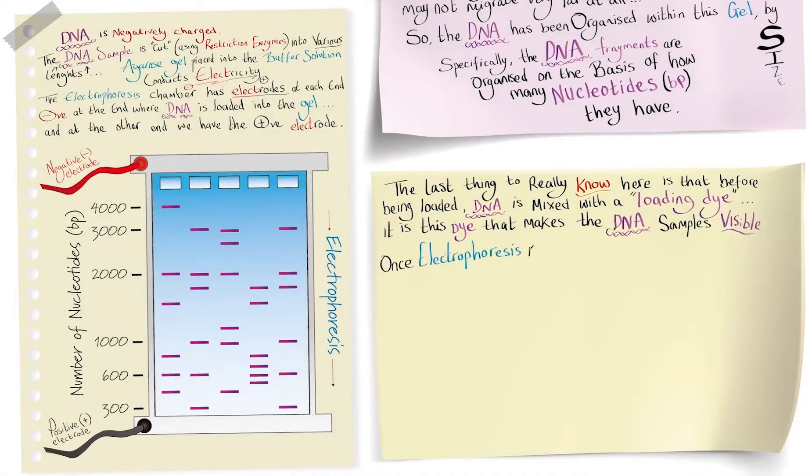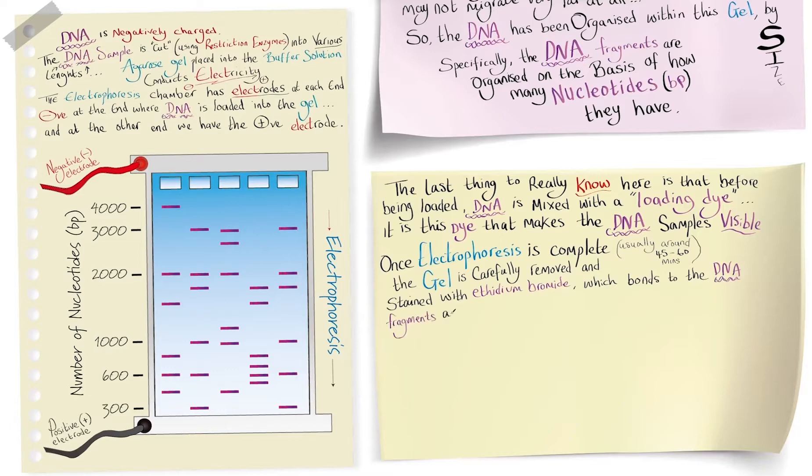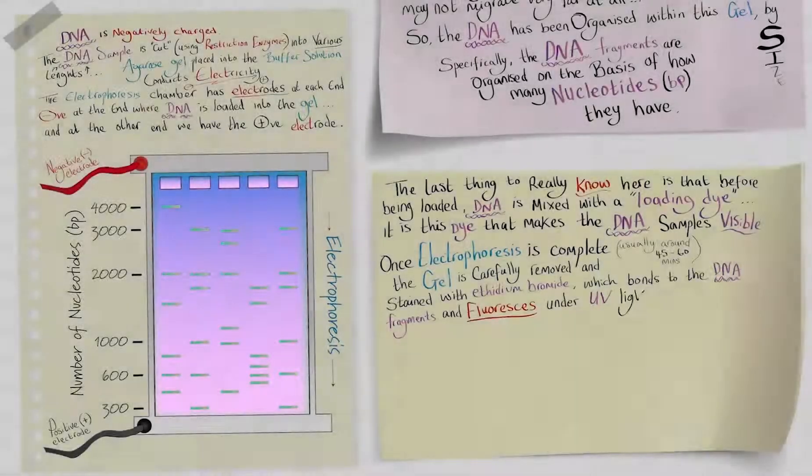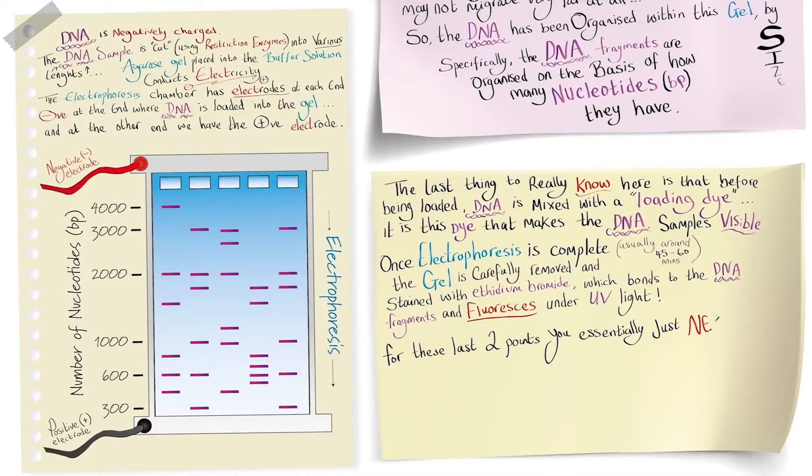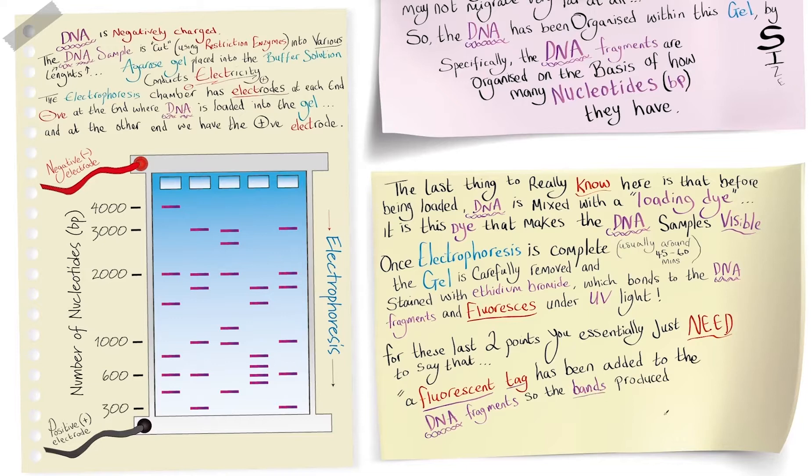Once electrophoresis is complete, which is usually around 45 to 60 minutes, the gel is carefully removed and stained with ethidium bromide, which bonds to the DNA fragments and fluoresces under UV light. For those last two points, you essentially just need to say that a fluorescent tag has been added to the DNA fragments so the bands produced in the gel can be viewed under UV light.